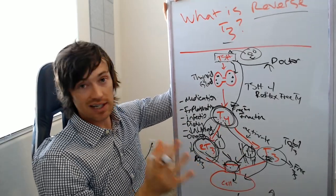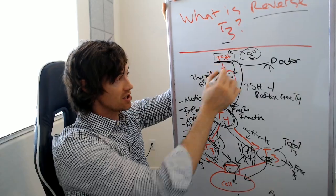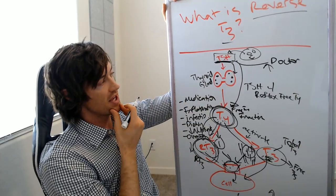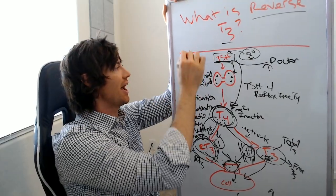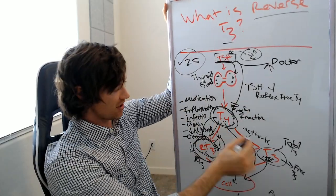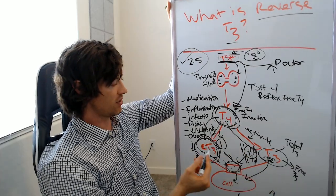And most doctors, like I said, only order the TSH. They will only order that lab test. And then they'll say, your TSH is, let's say 2.5. And they'll say, you know what? Yep. Checks out. Everything is good, but they haven't even looked at all these other things. They haven't looked at T4. They haven't looked at T3 and they haven't looked at reverse T3.